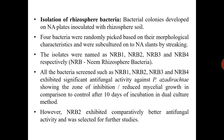All the bacteria screened — NRB1, NRB2, NRB3 and NRB4 — exhibited significant antifungal activity against Fomopsis azadiractae, showing a zone of inhibition or reduced mycelial growth in comparison to control after 10 days of incubation in the dual culture method that was followed. However, NRB2 exhibited comparatively better antifungal activity and was selected for further studies.